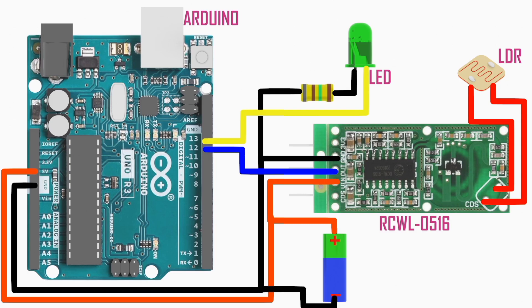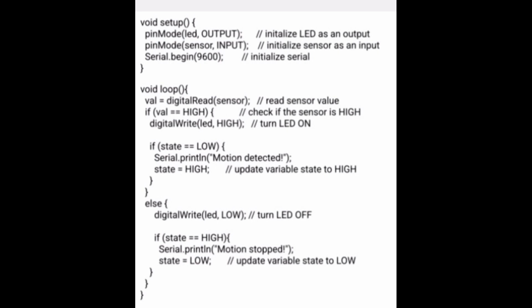Understanding the coding used in the Arduino: the Arduino module has power pins, analog input pins, and digital pins. In the void setup, you must initialize the LED as an output, the sensor as an input, and initialize serial communication. In the void loop, the Arduino reads the sensor value. If the sensor is high, it turns on the LED, indicating motion is detected. If low, it turns off the LED, indicating motion has stopped. This is a basic example of how to code with Arduino.